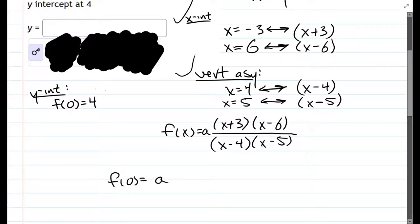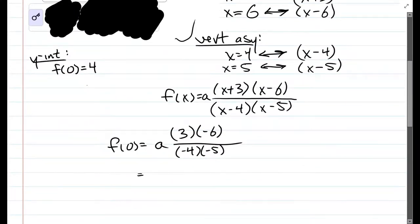So what is f of 0? 0 plus 3, 0 minus 6, 0 minus 4, 0 minus 5. There's not much reduction you can do here. 3 times negative 6 is negative 18. Both of these are even, so we'll cancel out a 2 here. So this is where we get negative 18 over 20. And the y-value is 4, so that's what this equals.